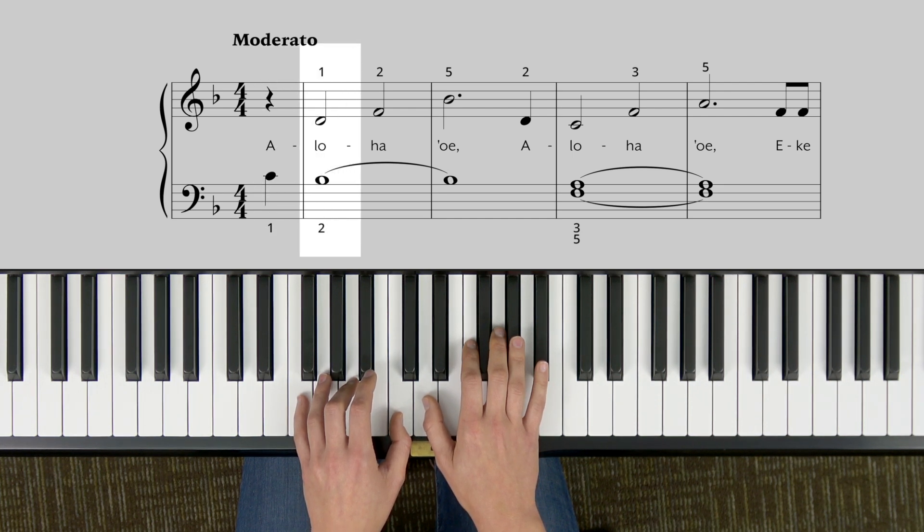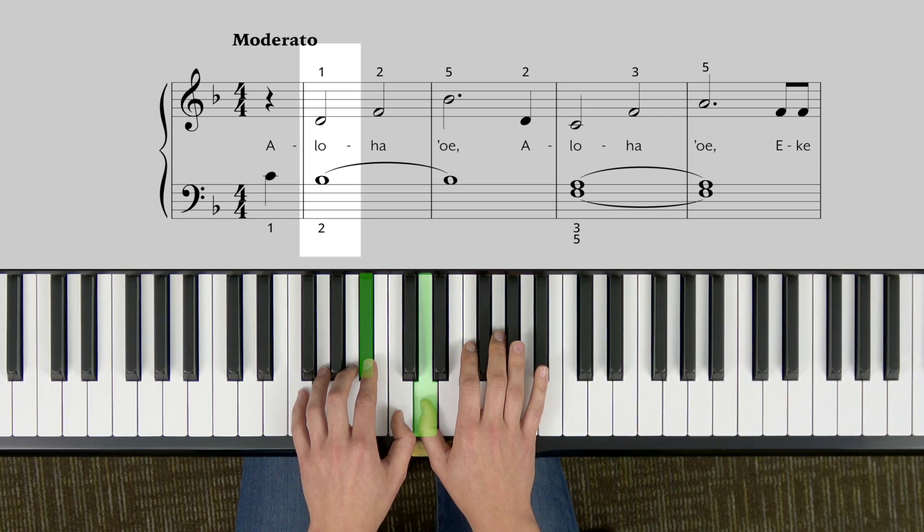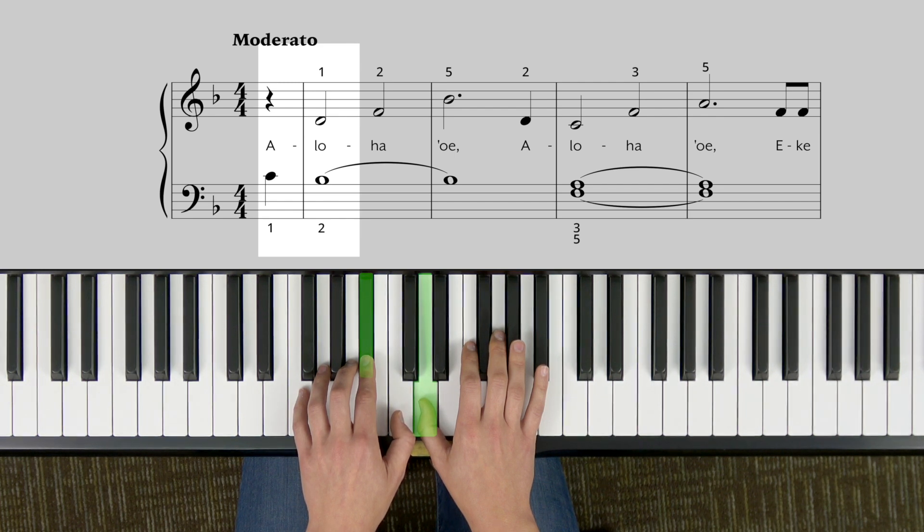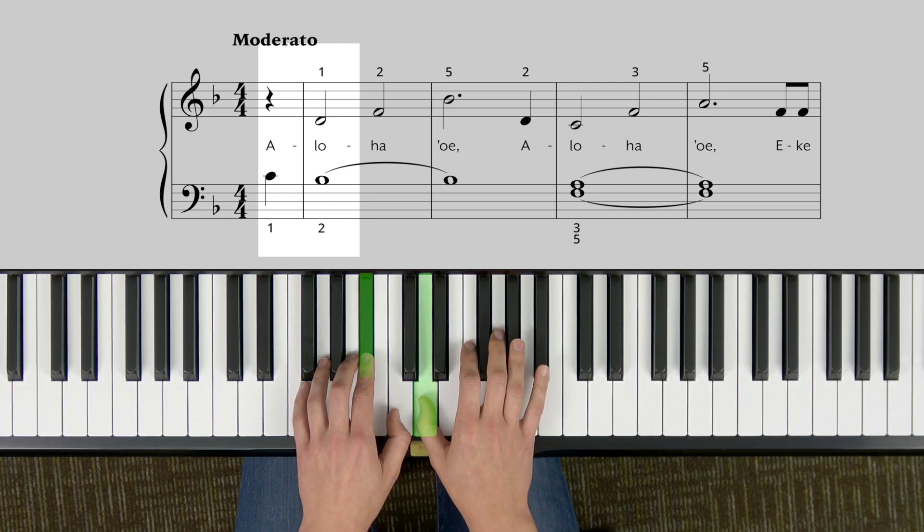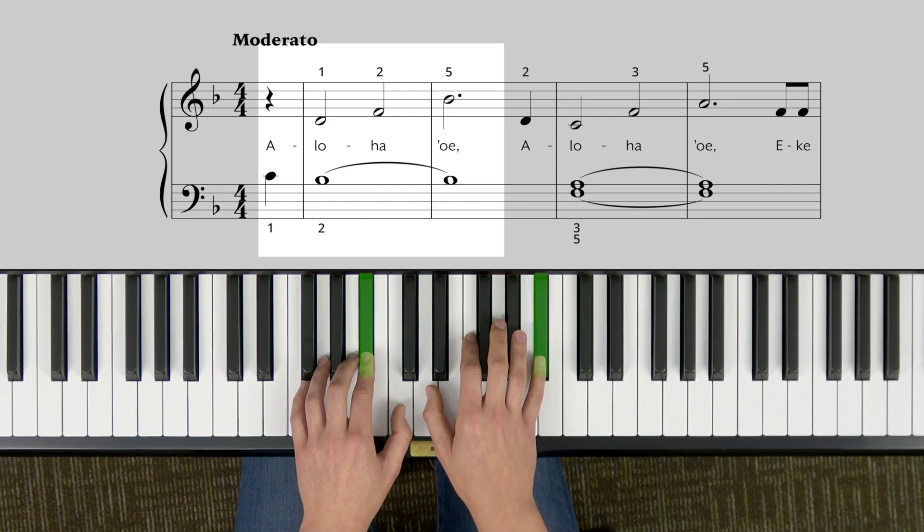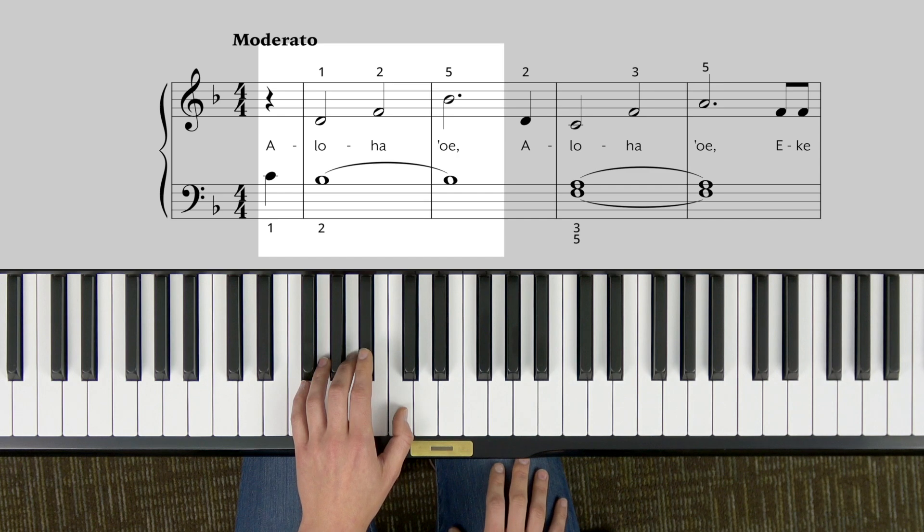We're immediately going to play a left hand note for the first chord. So it is a chord because you're playing two notes at once, but you're only playing one note with the left hand. And it looks like this. Left hand plays the first note and goes down to B flat while your right hand plays D. So if that makes sense, you're playing a chord, it's just that the left hand is playing only one note.